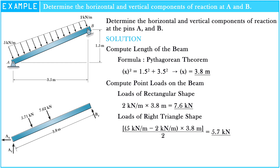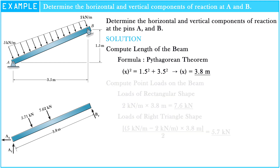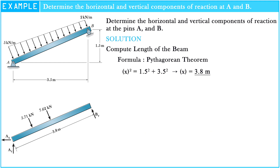Now our problem seems easier after we compute the length of the beam and convert the irregular loads to point loads. So let's apply the moment equation of equilibrium about A and B respectively.